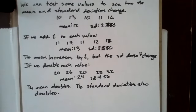We can test some values to see how the mean and standard deviation change. Here we have a set of values: 10, 13, 10, 11, 16, with a mean of 12 and the standard deviation of 2.280.